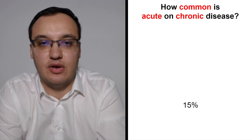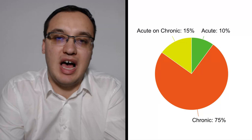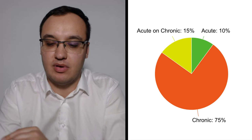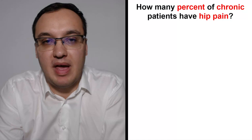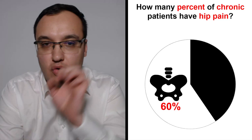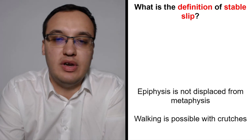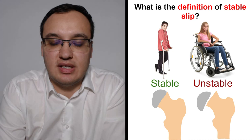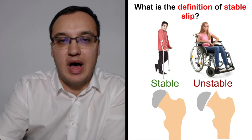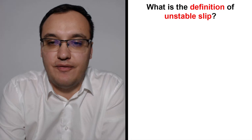Acute disease accounts for about 10%, chronic is around 75%, and acute-on-chronic is about 15%. The most common type is chronic. Of chronic patients, 60% have hip pain — remember, 15% can present with knee pain.